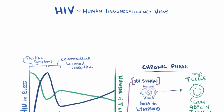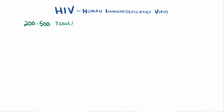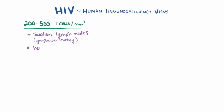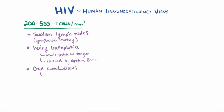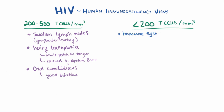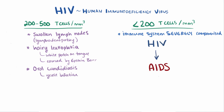When T cells drop to between about 200 and 500 cells per cubic millimeter, patients start experiencing symptoms like swollen lymph nodes or lymphadenopathy, as well as relatively minor infections like oral hairy leukoplakia — a hairy-looking white patch on the tongue caused by the Epstein-Barr virus — and oral candidiasis, a yeast infection in the mouth. As T cells fall below 200 cells per cubic millimeter, the immune system becomes severely compromised, and the condition has progressed from HIV disease to AIDS.